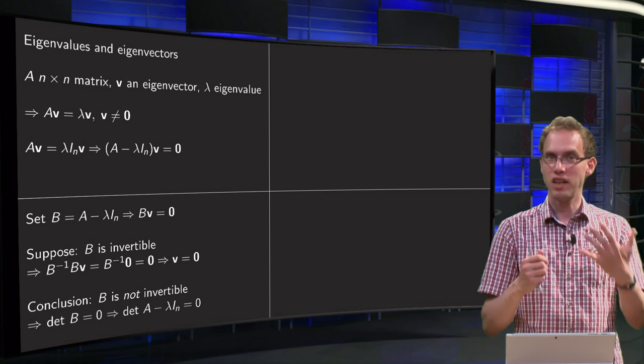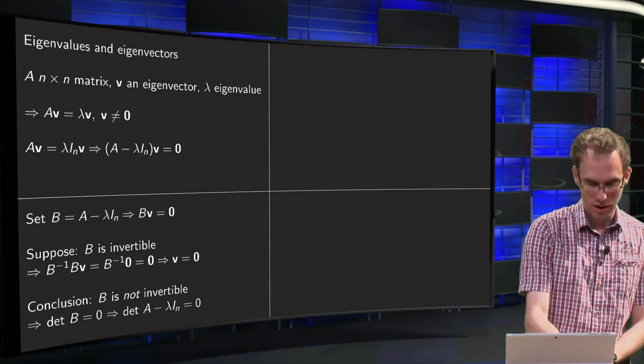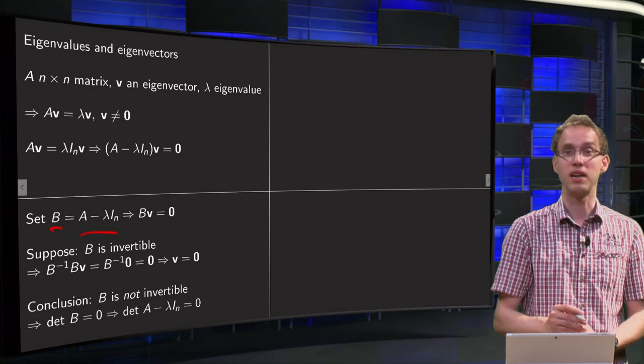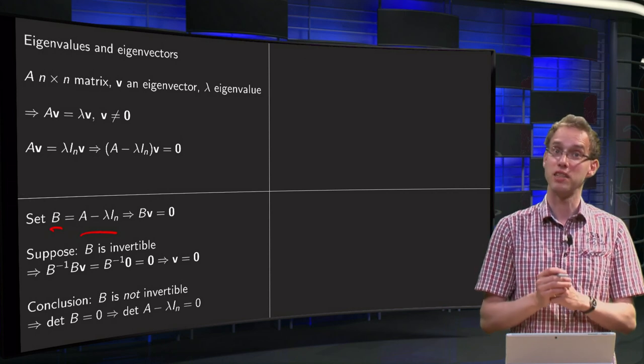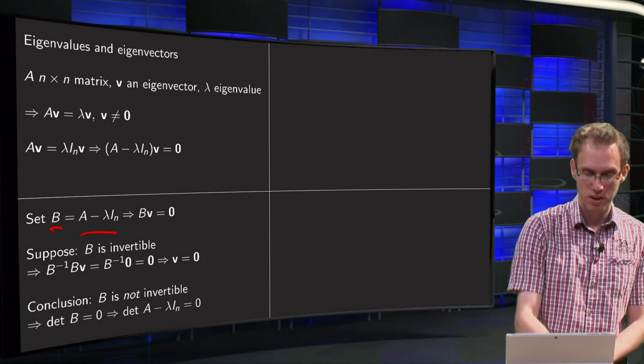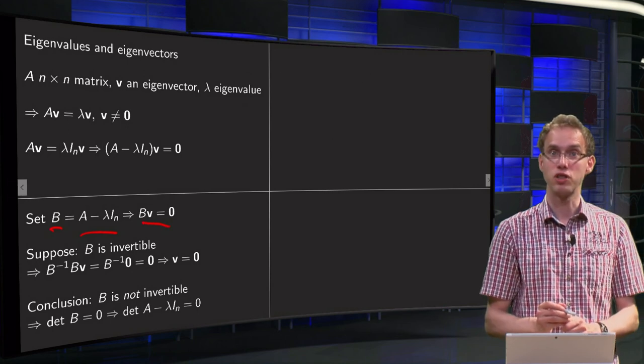And now let's set just for convenience B to the matrix A minus lambda times In. So we define a new matrix B as A minus lambda times In. Then I know of course that B times V equals zero.